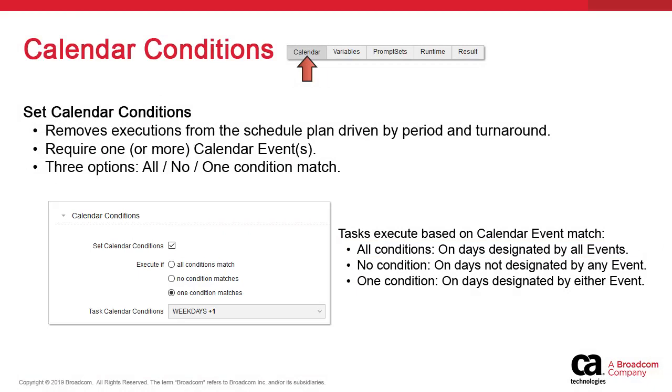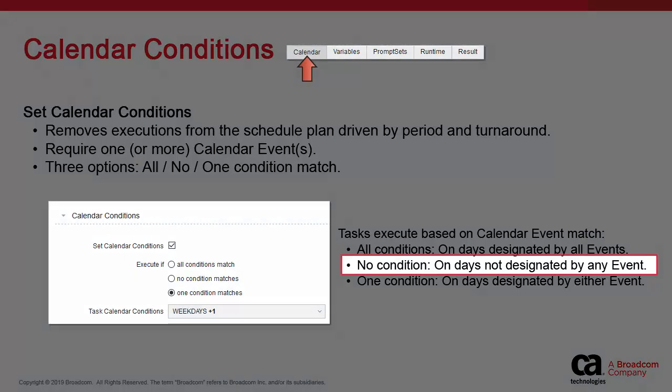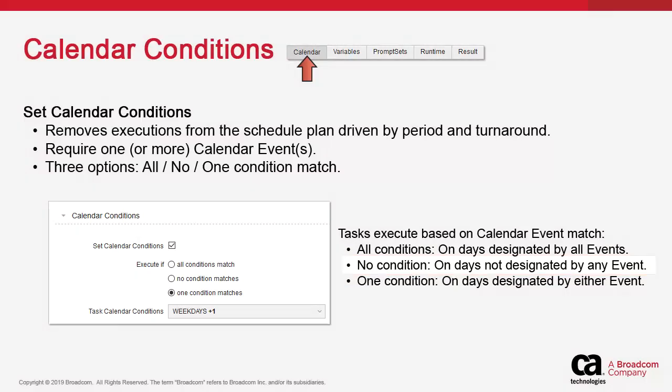The second option is execute if no condition matches. This ensures that the task will execute on days not designated by the calendar events. If the event is weekdays, the task executes presumably on weekends and holidays. It is a subtraction and a boolean NOT.